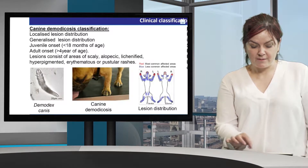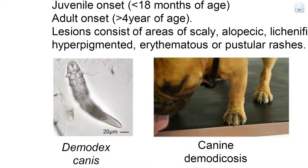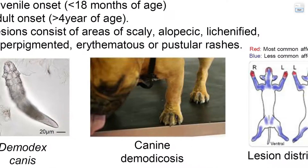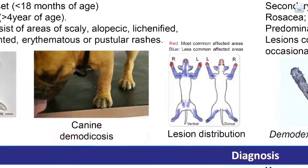The first picture represents Demodex canis — we can see this mite with its small legs. The second picture is of a dog with canine demodexosis, and we can see that his paws are severely affected. The lesion distribution tends to be the paws and around the face, especially around the eyes and mouth, and then less commonly the ventral aspects of the axilla and inguinal areas and the hind legs.